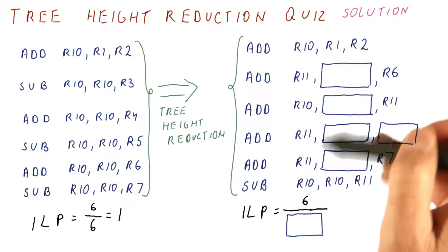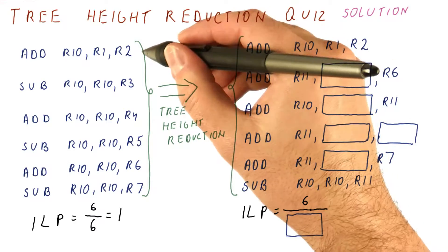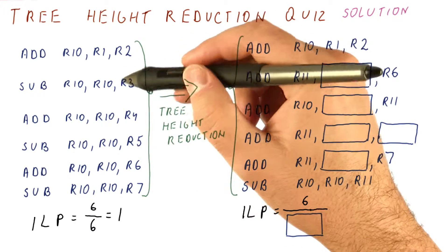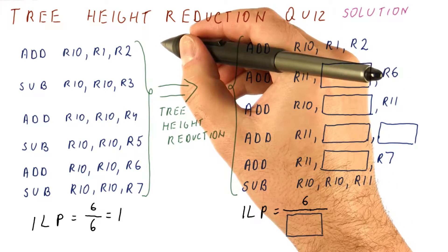Now, when doing tree height reduction, what we need to do is really figure out what is the expression that this is trying to compute and then rewrite that expression. So here's what we have here.